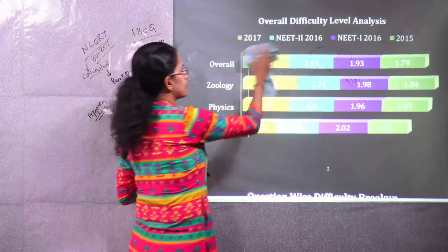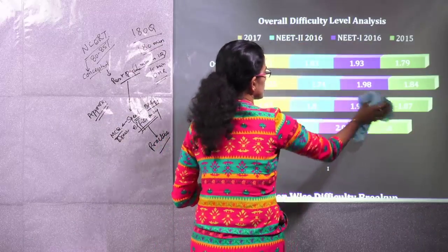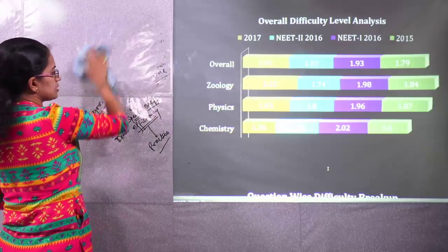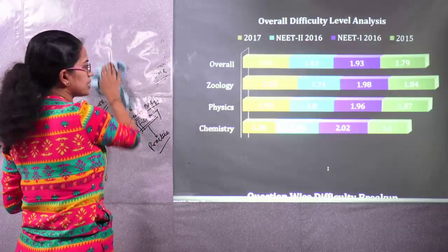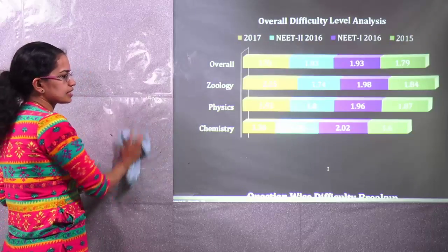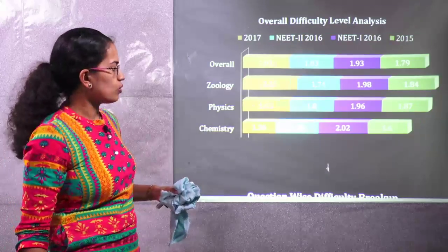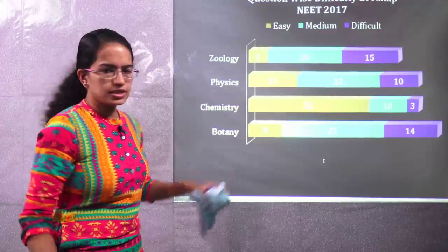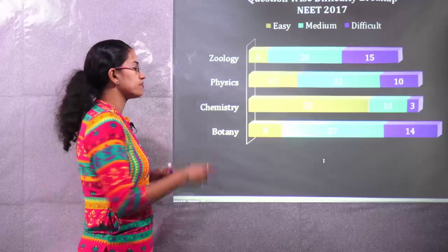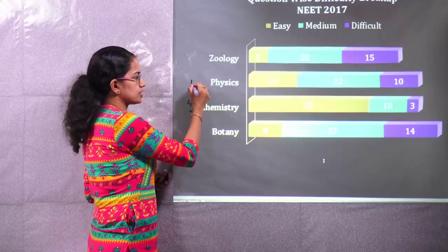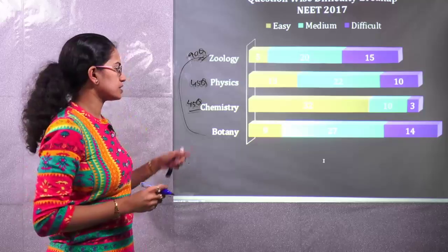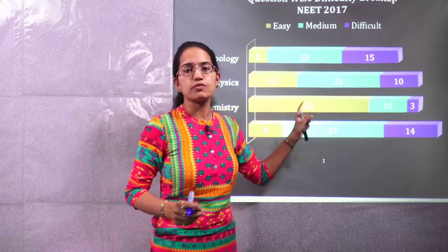If we talk about the level of difficulty and score it on a scale of 1 to 3 — 3 being most difficult, 1 being least difficult — for 2017, the difficulty level for biology, both zoology and botany, was difficult. However, for physics and chemistry, the paper was relatively easier. Interestingly, for 2017, nearly 32 out of the 45 questions from the chemistry section were very easy. Chemistry has 45 questions, physics has 45 questions, and zoology and botany together form 90 questions from biology. So chemistry was exceptionally easy in 2017.